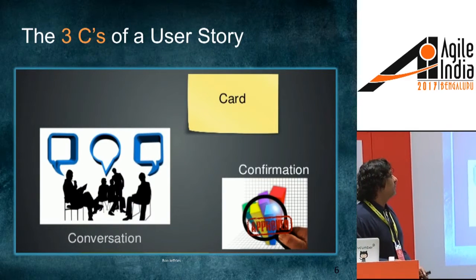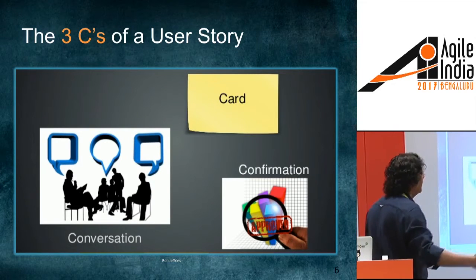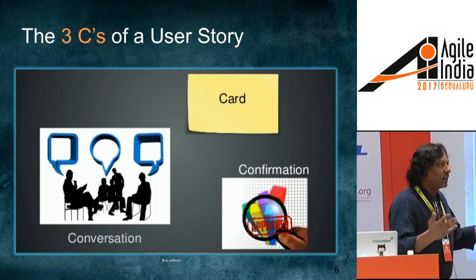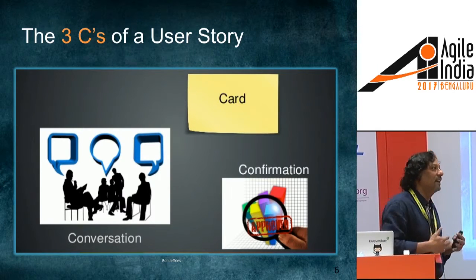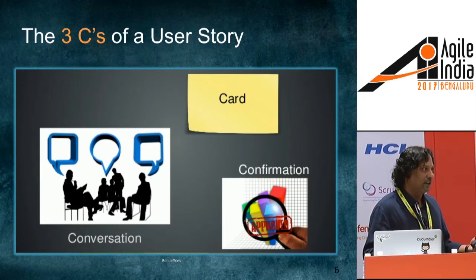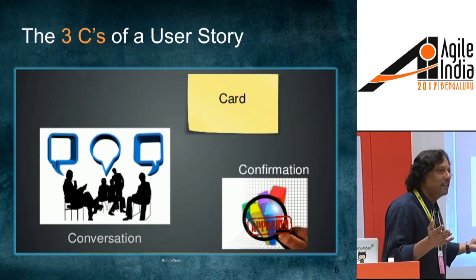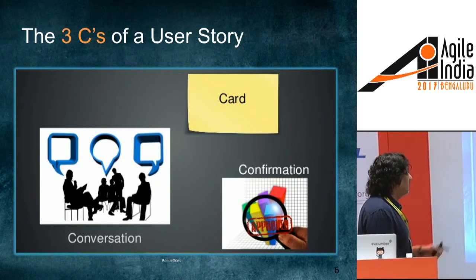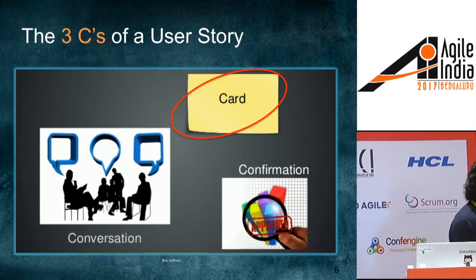How many of you have heard of Ron Jeffries' three C's of a user story? Every story, no matter how you express it, needs to conform to these three guiding principles. The first C is 'card' — a card is essentially a token, intentionally meant to be a small index card, because you don't want to write the entire requirement. Details are meant to emerge over time; they are not locked down upfront — very different from our traditional approaches.